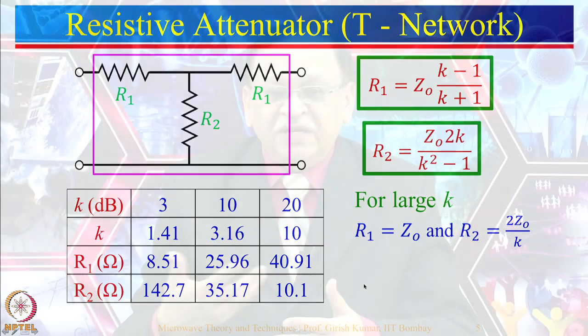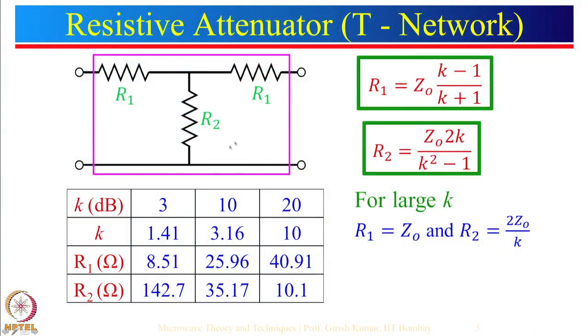Using these resistor values you can realize a fixed attenuator. You can also use variable resistors in the T network to tune the attenuator and realize a variable attenuator. However, in practice that approach is not used — we use a different method which will be shown in the next few slides.